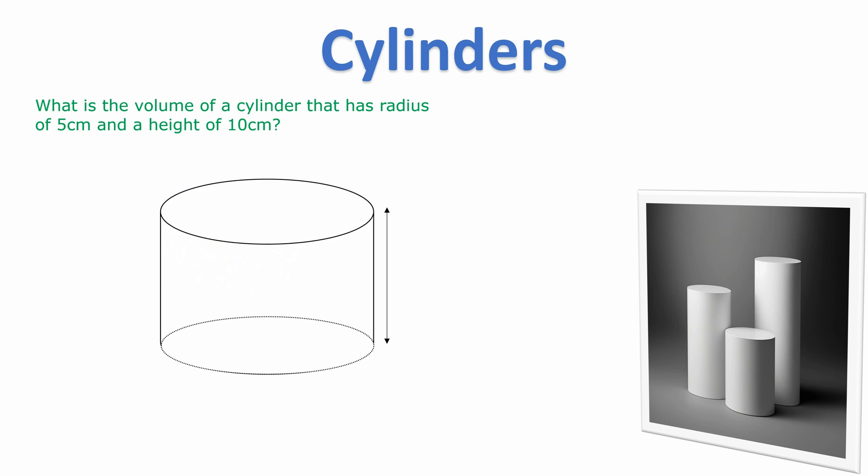That's why the formula is πr² for the area of a circle multiplied by the height. It's that area of a circle extended up through the shape.